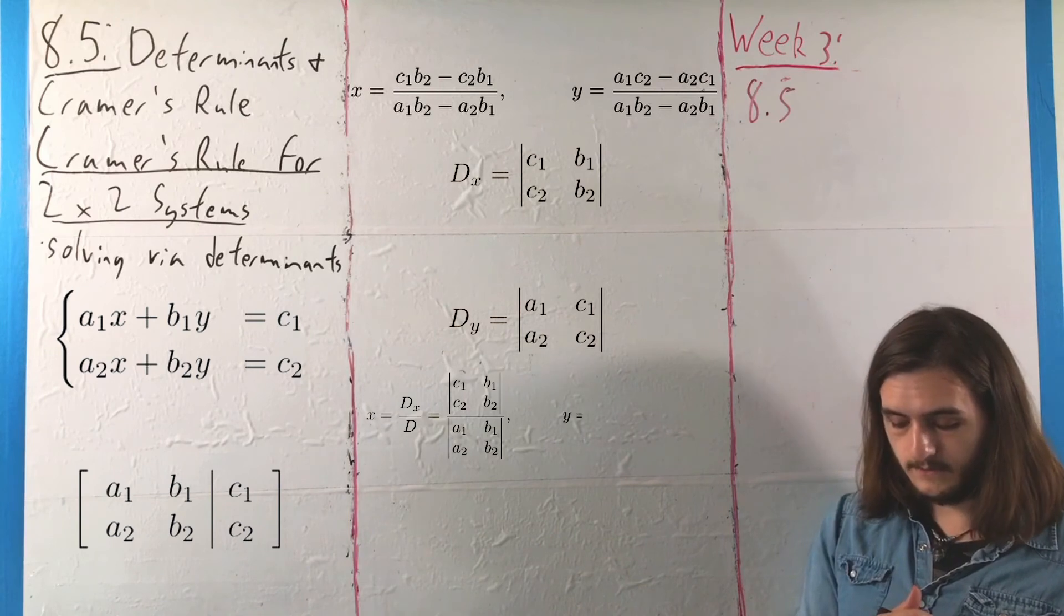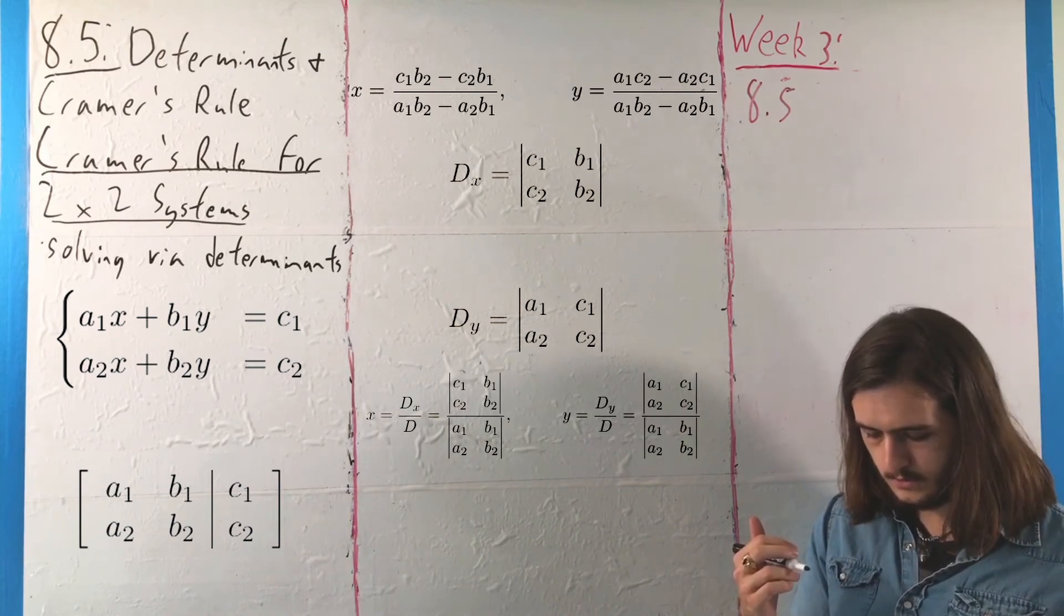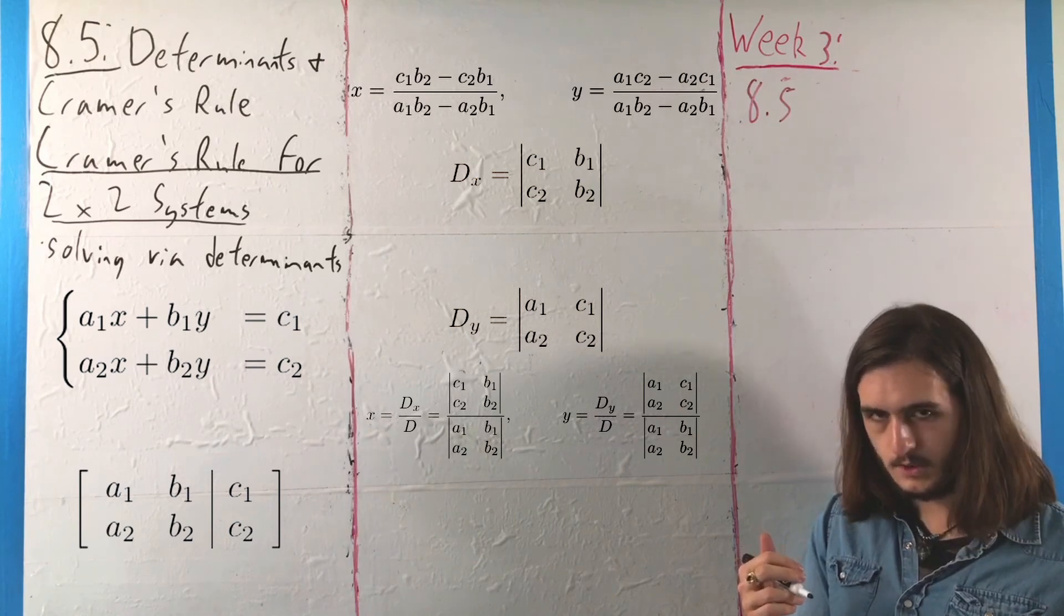But for Y, we would also have DY over D, or A1A2C1C2 divided by A1B1A2B2.